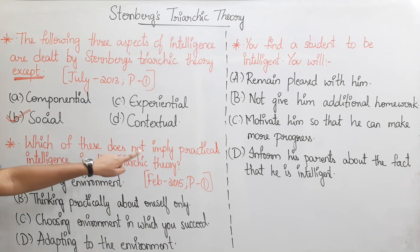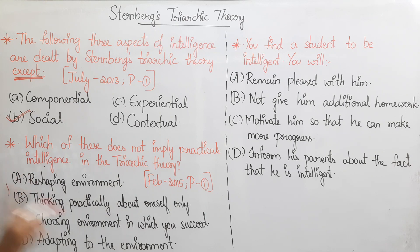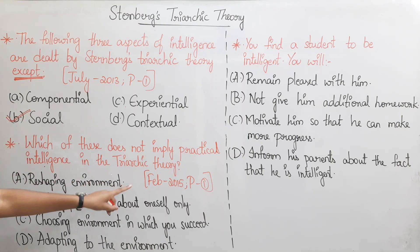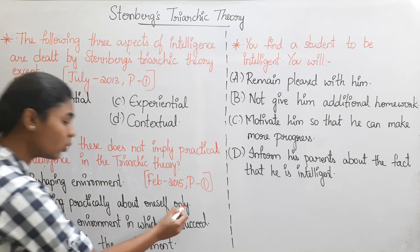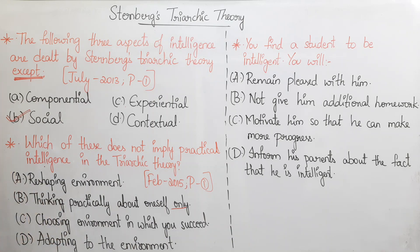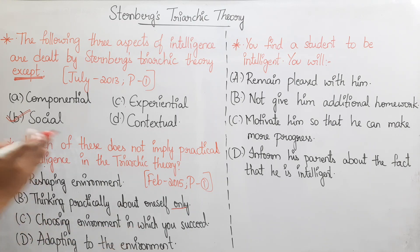Next question from February 2015, Paper 1: Which of the following does NOT imply Practical intelligence in the Triarchic Theory? Option A: Reshaping the environment. Option B: Thinking practically about oneself only. Option C: Choosing an environment in which you succeed. Option D: Adapting to the environment.